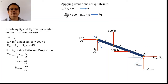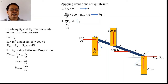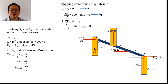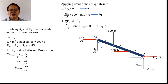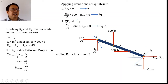Applying the second condition, summation of vertical forces equal to zero, using upward as positive: R_B/√5 − 600 + R_AV = 0. This is equation two. Since R_AH equals R_AV, we can eliminate them by adding the two equations together, so that R_AH and R_AV cancel each other.